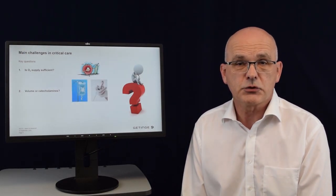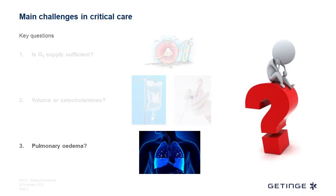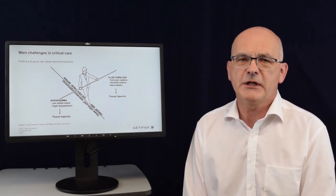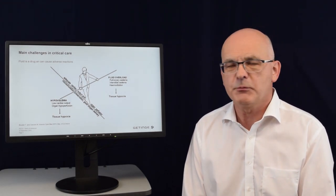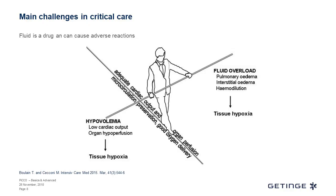In certain patient groups we can also expect problems with the lungs. Maybe there is already a risk of development of pulmonary edema, or pulmonary edema is already present. When we talk about fluid administration, we have to keep in mind that fluid is also a drug and can cause adverse reactions. So the volumetric treatment of the patient is like balancing on a thin line of the optimal situation, where we have adequate blood flow, adequate cardiac output, and thus adequate oxygen supply.